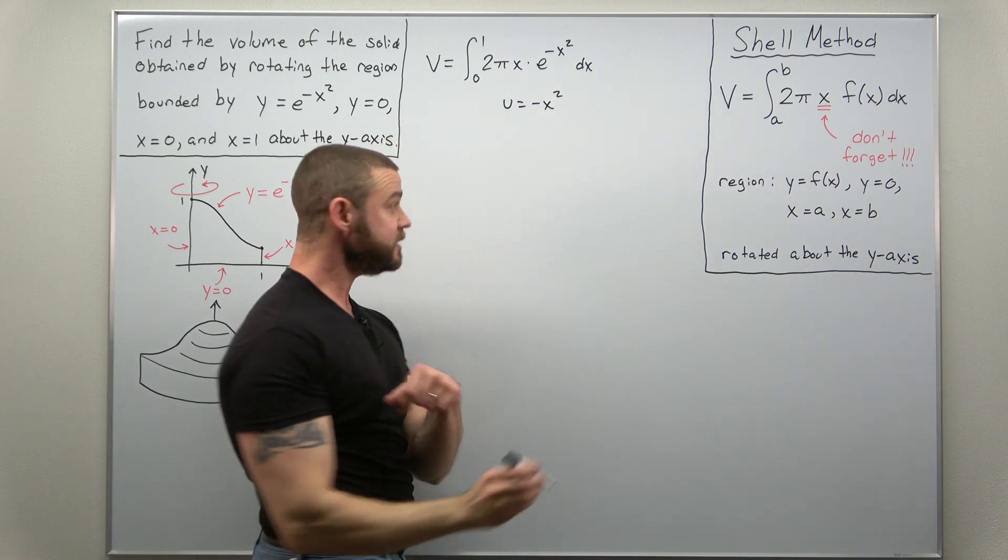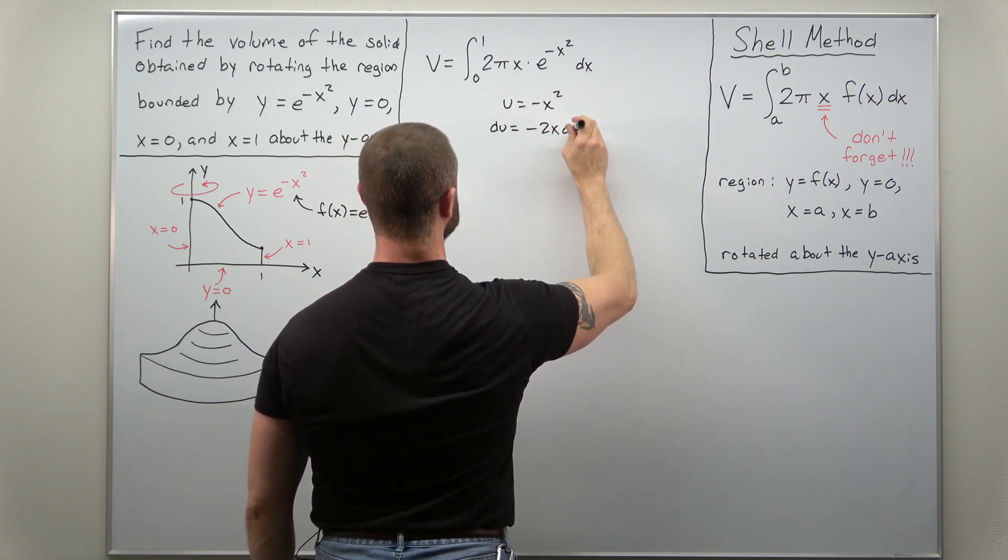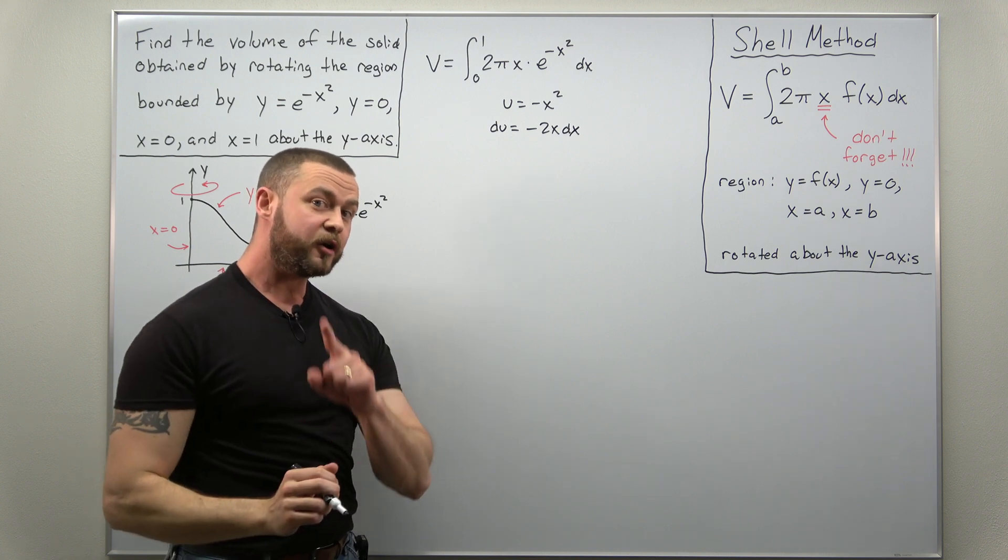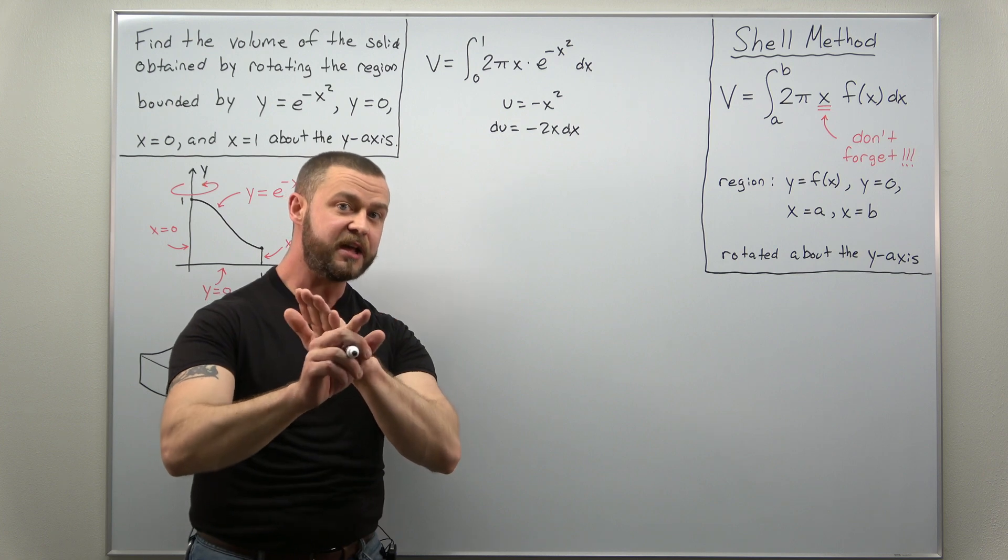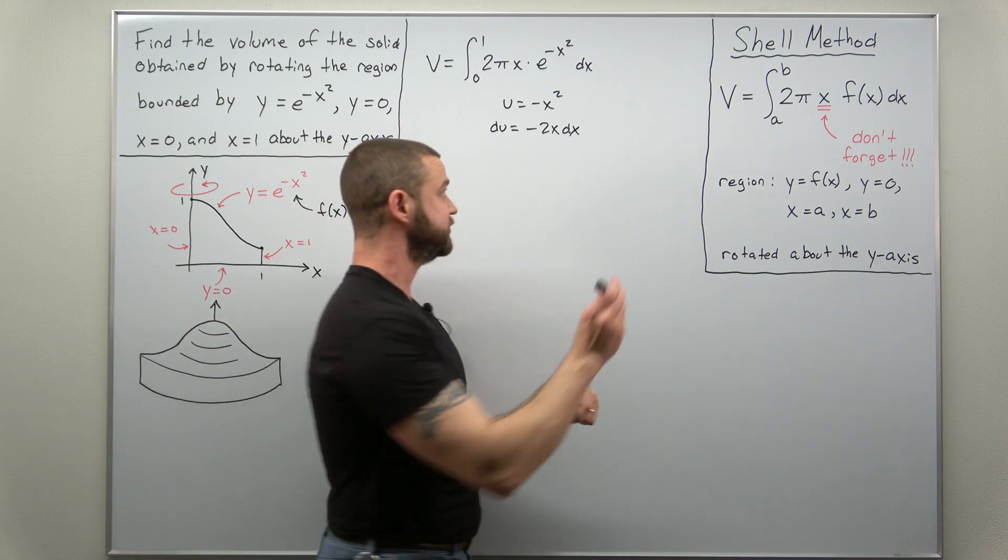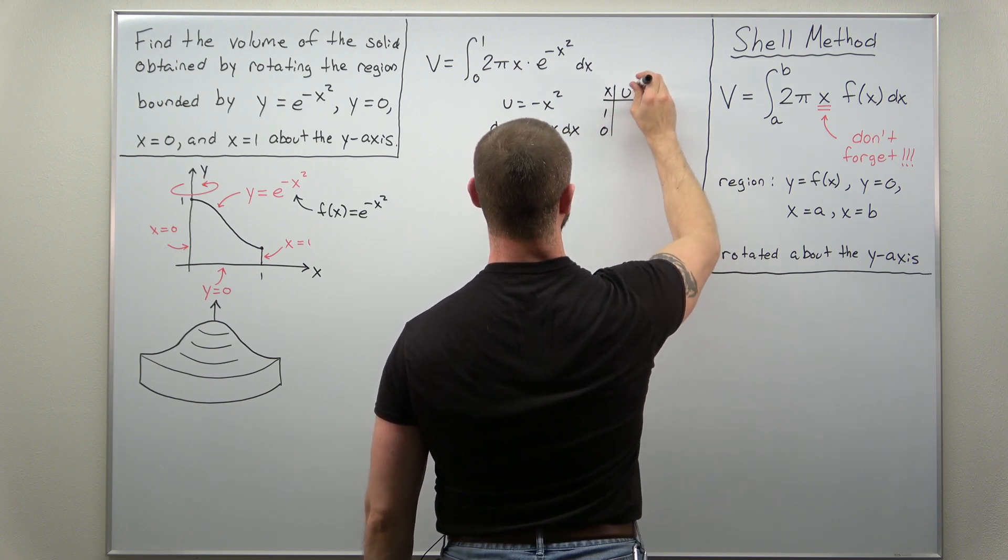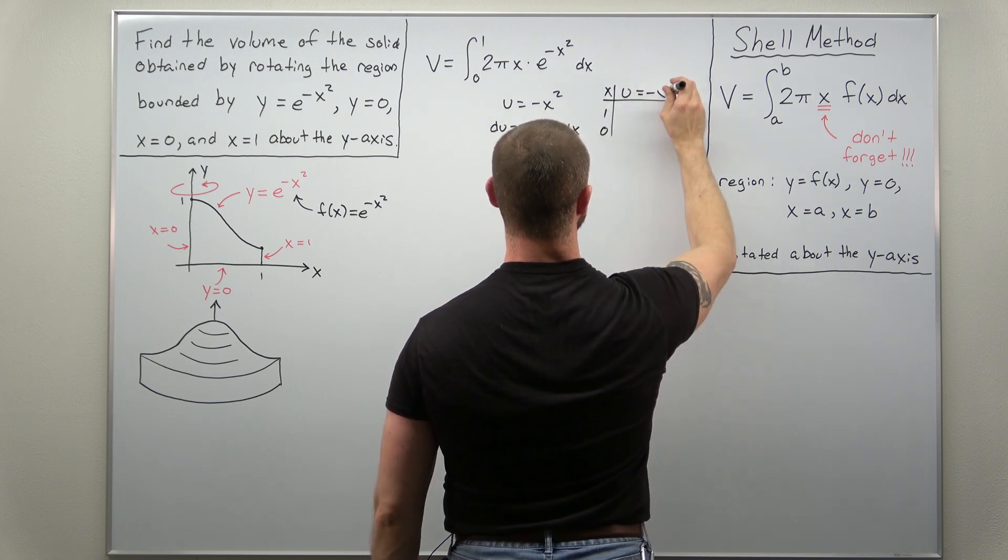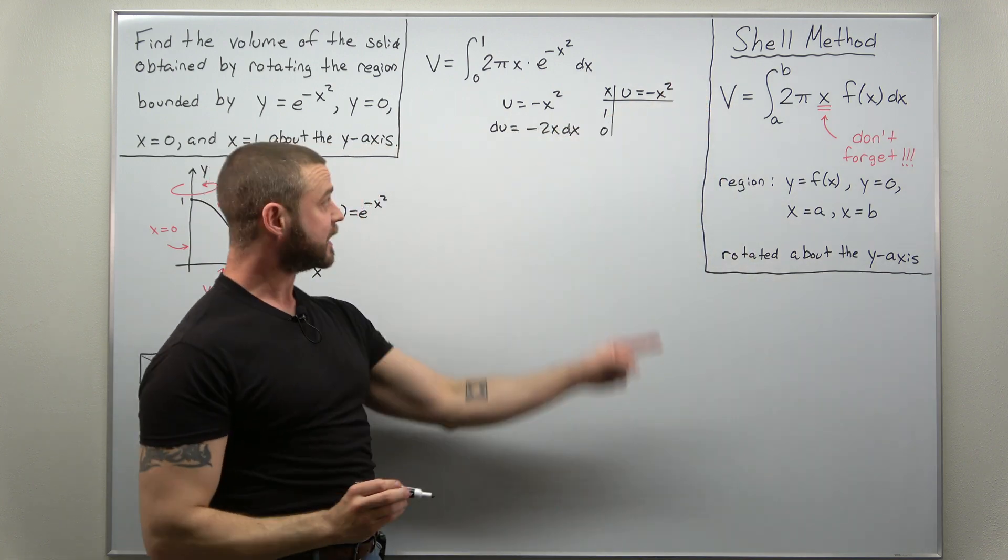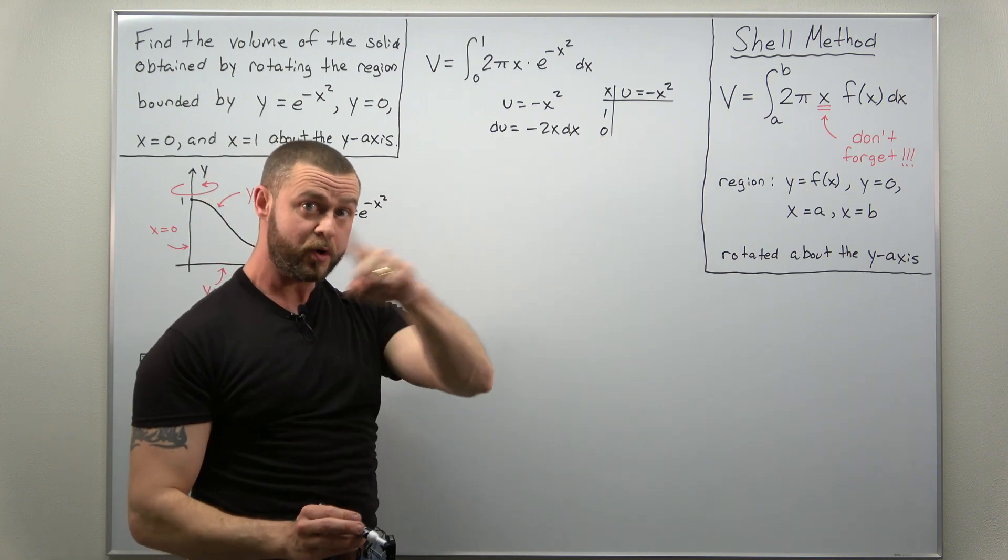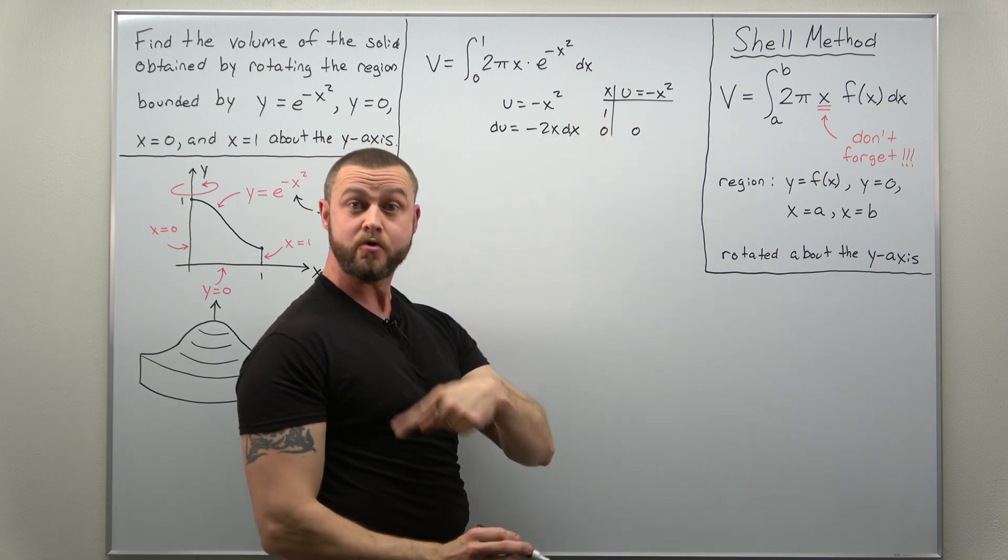Calculate your differential du which here is going to be negative 2x dx and since we are using a substitution with a definite integral, I always change or convert the limits using our substitution. So if we set that up, originally we have x limits from 0 to 1 and we're using our substitution u as negative x squared and we just plug in our values for x. Plug in x as 0, you're going to get u as 0 and if you now plug in x as 1, you get u as negative 1.